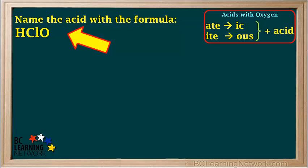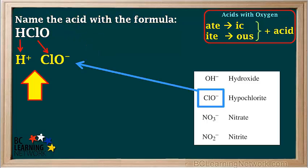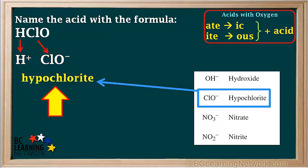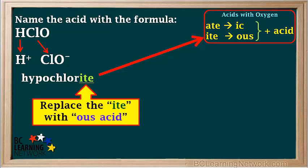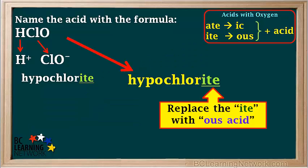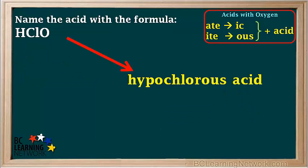Let's do another example. We're asked to name the acid with the formula HClO. We can break up HClO into H⁺ and ClO⁻ ions. The polyatomic ion ClO⁻ contains oxygen and is called hypochlorite, which ends in the letters -ite. The rule for acids with polyatomic ions ending in -ite is to replace the -ite with -ous and add the word acid. So hypochlorite becomes hypochlorous acid — the name of HClO is hypochlorous acid.